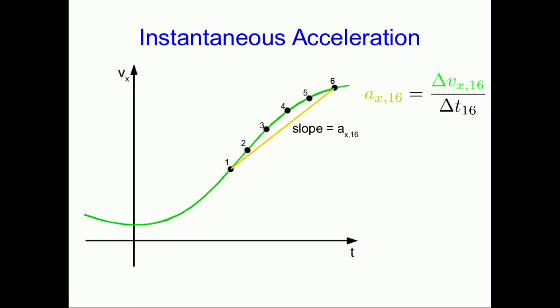And if I want to get closer and closer to what we would call the slope at, say, time one, I would look at smaller and smaller time intervals. So again, I'm taking the limit as delta t goes to zero, and the slope will approach the slope of the tangent line at t one. So that's this limit, and it's what we define as the derivative.